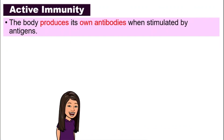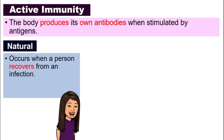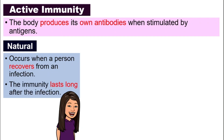Active immunity means our body produces our own antibodies when stimulated by antigens. Let's look at natural active immunity first. This occurs when a person recovers from an infection — meaning after you fall sick and then get better, that is when natural active immunity happens. And this immunity actually lasts long.